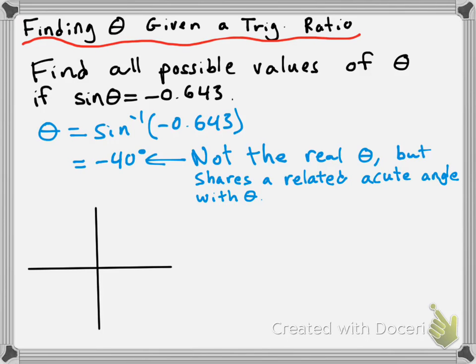So here's my Cartesian plane. Let's just draw out the cast rule, so C-A-S-T. So where is sine negative according to the cast rule? Well, it's going to be negative in quadrant 3, and then it's going to be negative in quadrant 4. So we want to consider those two quadrants. So let's start with quadrant 3.